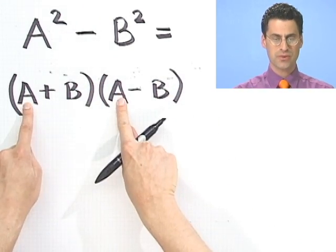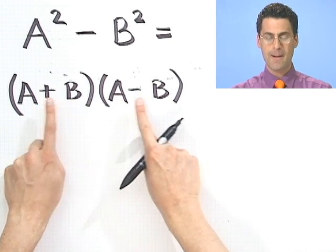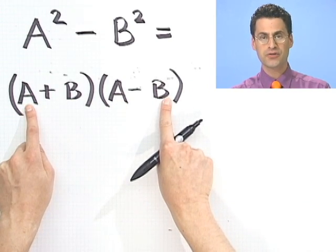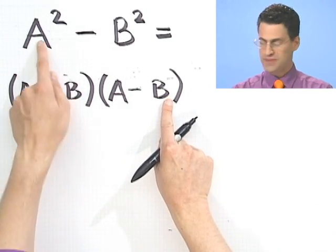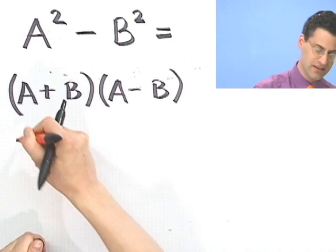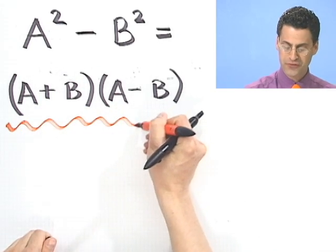And let's check and see what happens. a squared plus ab minus ab, note those middle terms annihilate themselves, and I am left with just a minus b squared. So in fact, this is the way to always factor the difference of two perfect squares.